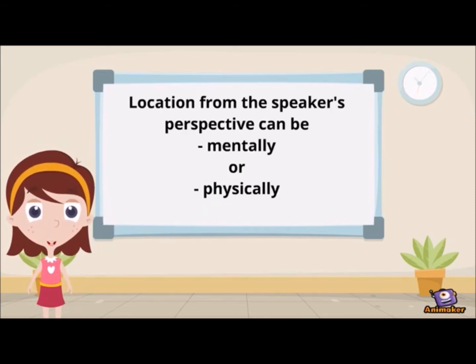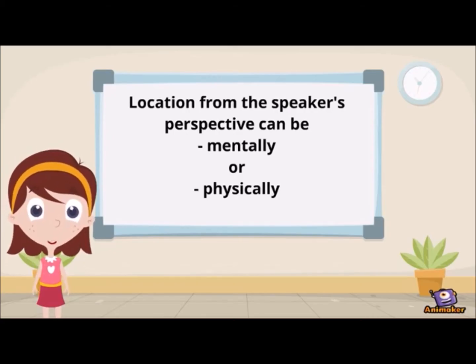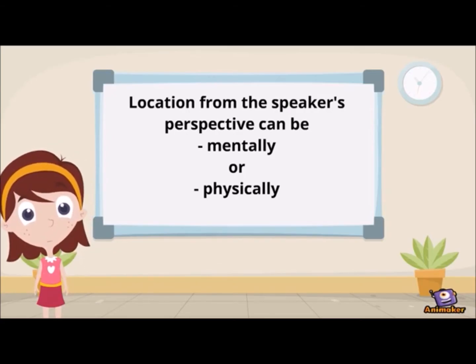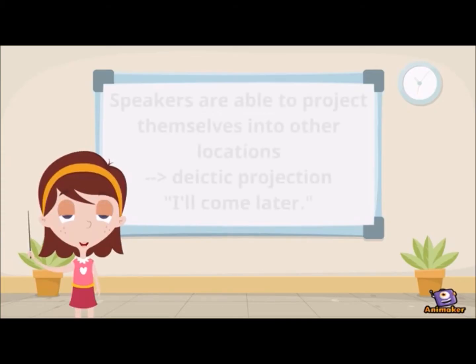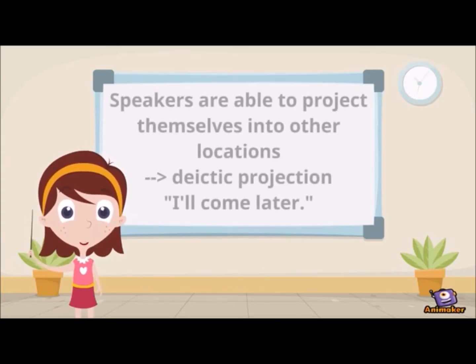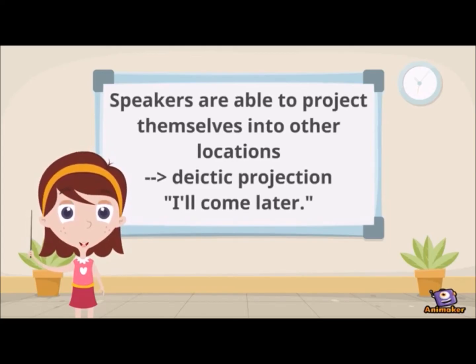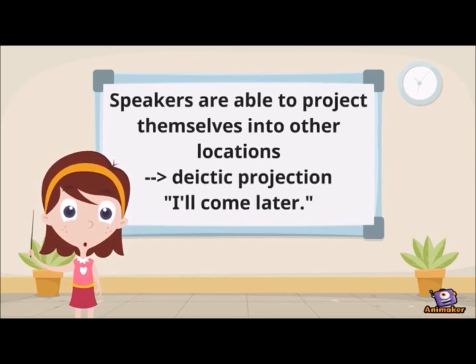It is important to remember that location from the speaker's perspective can be fixed mentally as well as physically. Speakers seem to be able to project themselves into other locations when uttering a phrase like 'I'll come later.' This phenomenon is called deictic projection.